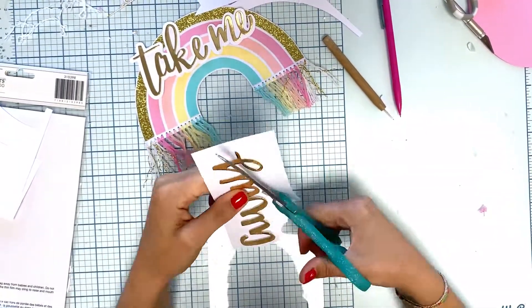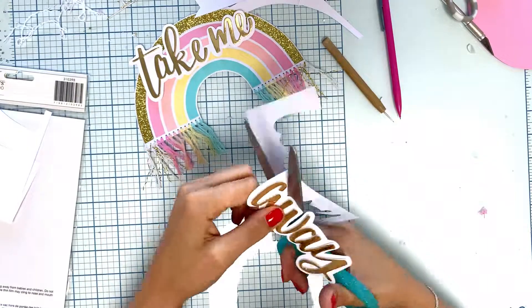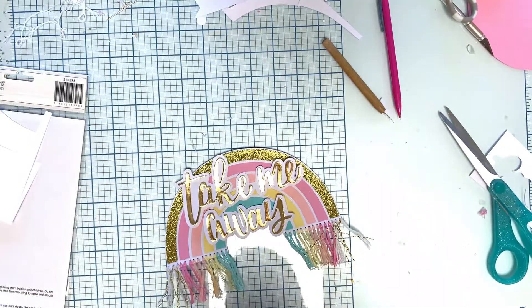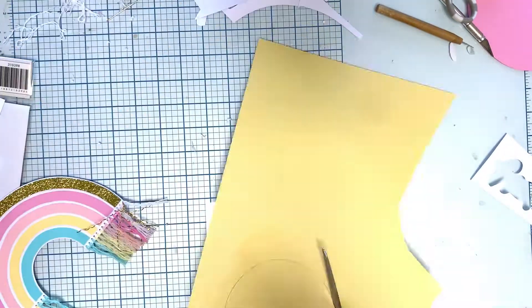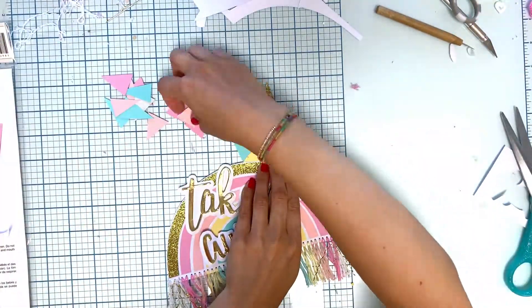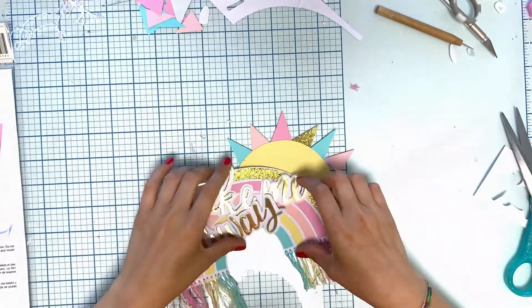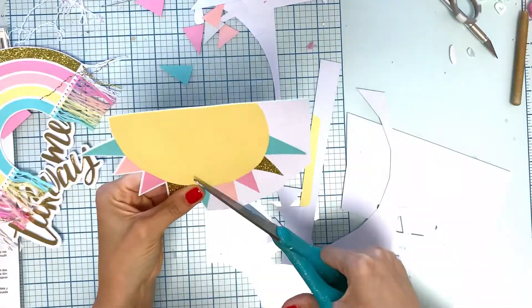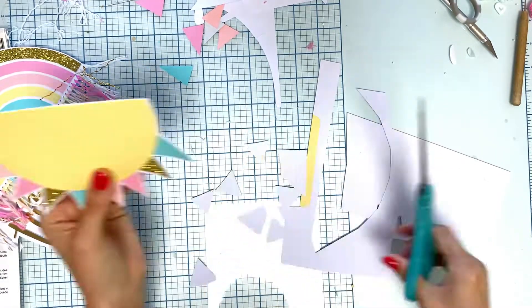When all my little strands were done, I chose a title. I first started by wanting to stitch it, but it wasn't really working. I decided to use word stickers instead. I went through my stash and chose a very old one from the Take Me Away collection from Paige.